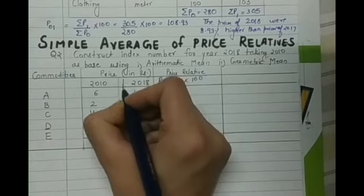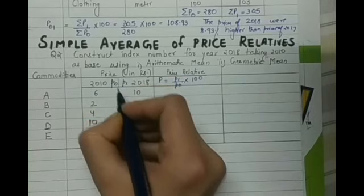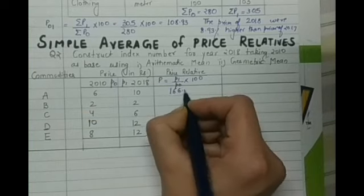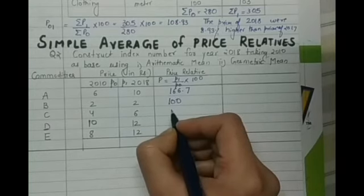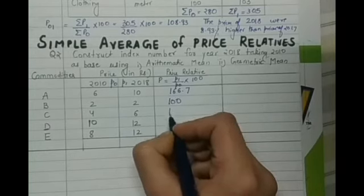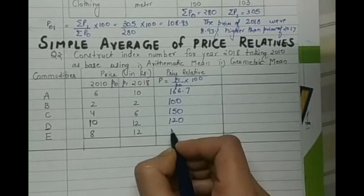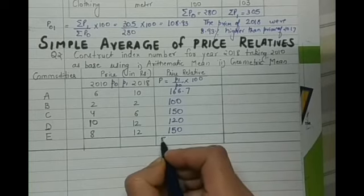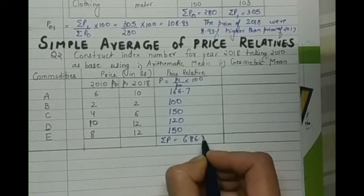So 10 by 6 into 100 is 166.7, 2 by 2 into 100 is 100 percent, 6 by 4 into 100 is 150 percent, 12 by 10 into 100 is 120, 12 by 8 into 100 is 150. So the sigma P is 686.7.